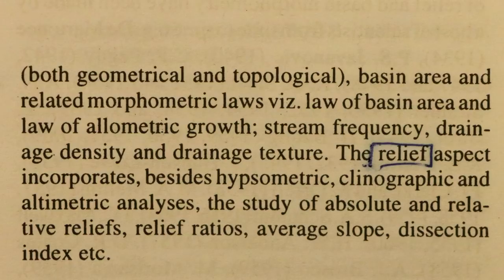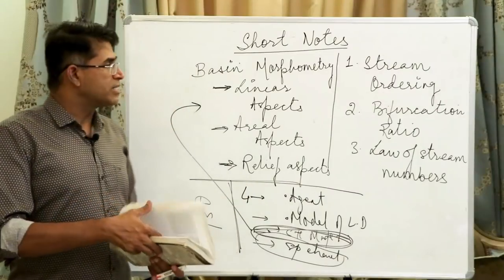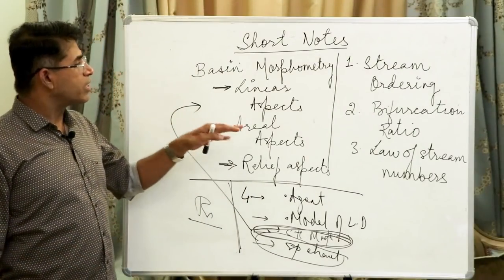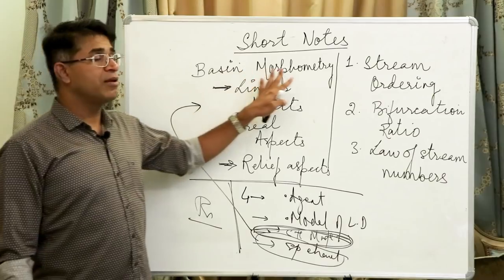Looking at the fourth line from the top of the second column, it says: 'The relief aspect incorporates, besides hypsometric, clinographic, and altimetric analysis, the study of absolute relief, relative relief, relief ratios, average slope, and dissection index, among others.' This gives an idea of what is the scope of the concept called basin morphometry.